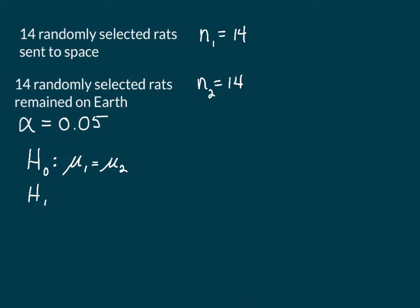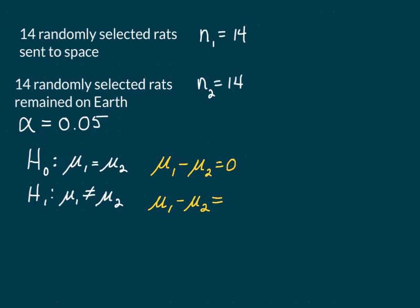Our alternative hypothesis would be that the two means are not the same. Sometimes for this type of hypothesis testing you will see the null and alternative hypotheses written slightly differently. Because if the two means are equal and you subtract one from the other, you get zero. So you could write the null hypothesis as the difference equaling zero, and the alternative hypothesis as the difference not equaling zero. This will become very important when we write our test statistic.